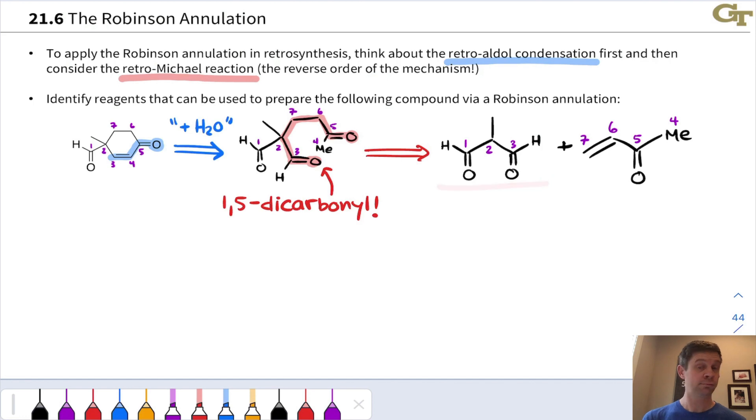Here's our Michael donor—we can form a stabilized enolate there at carbon two—and our Michael acceptor right here with a double bond between carbon seven and six. I encourage you at this point to actually pause the video and make sure you understand how each of the numbered carbons translates into the subsequent structure in the retrosynthesis, because you're going to want to be able to work backwards from a Robinson annulation product all the way back to these starting materials.